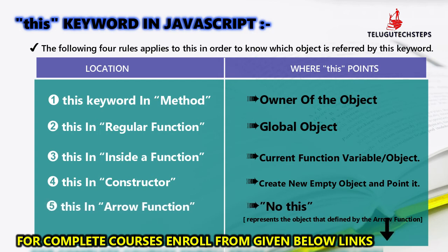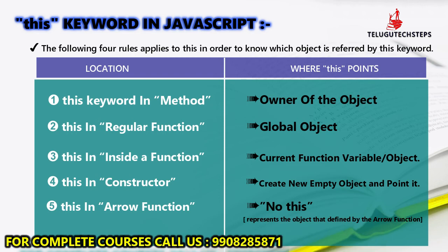Coming to the last and final, a very important thing: that is the arrow function. 'This' keyword in the arrow function does not change — it will not determine its own 'this'. In the arrow function, 'this' refers to the enclosing context. It represents the object that defines the arrow function.